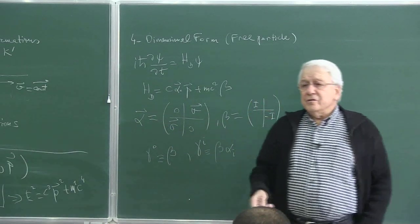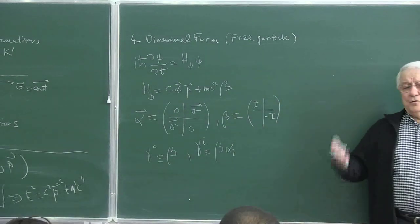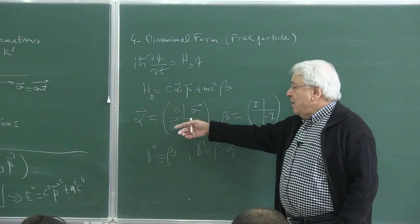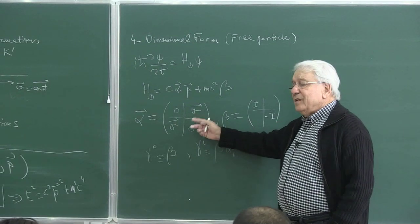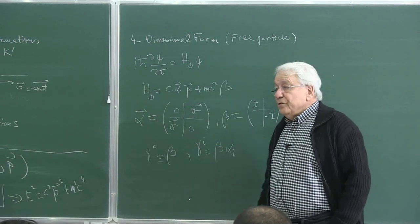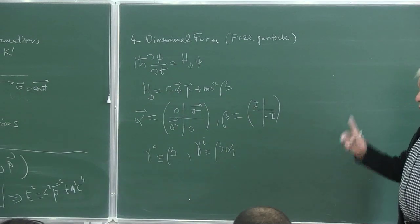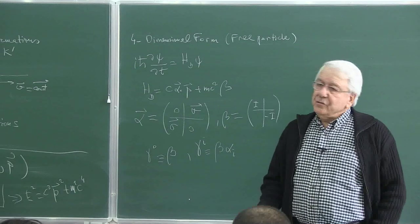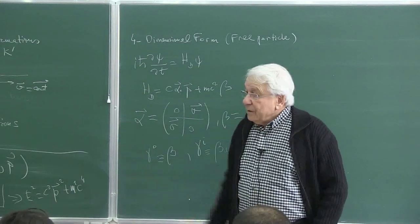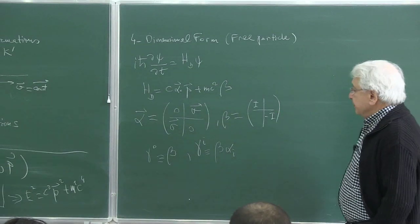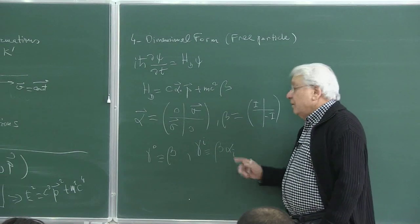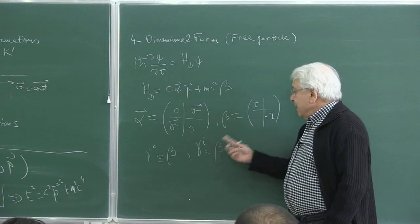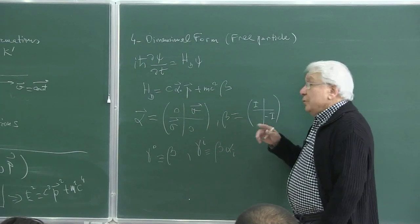When moving to the gamma matrices, I start with superscripts — contravariant components. The zeroth component is beta; but whether contravariant or covariant, the zeroth component doesn't change because of the form of g_mu_nu. The upper block is plus one. The superscript gamma^i is defined as beta times alpha^i. So gamma^0 is directly beta. To get gamma^i, take beta and multiply it with alpha^i.